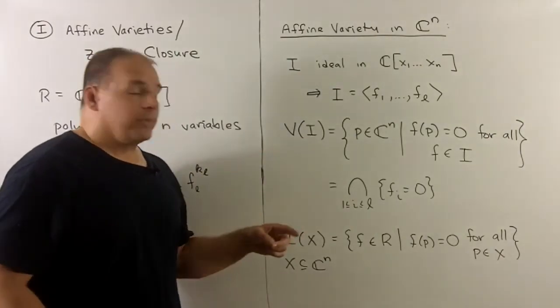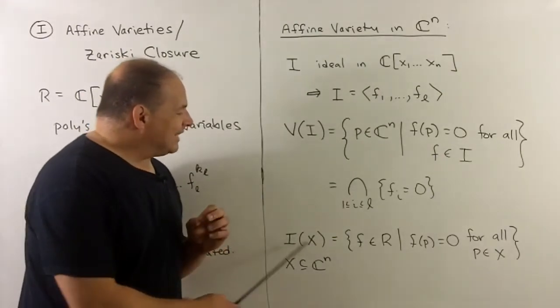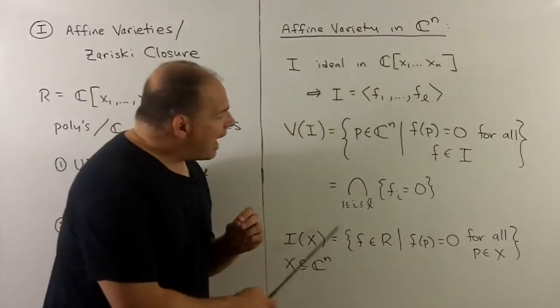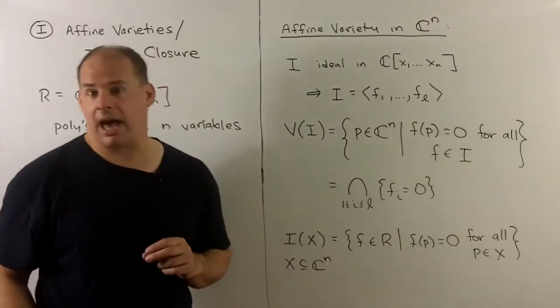Now in the other direction, if I'm given any subset of Cn, we can attach an ideal to that just by taking all polynomials that vanish on our set X, the points of X, at the same time.